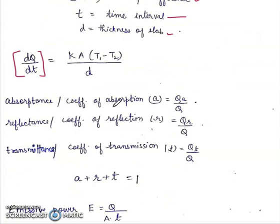Absorptance or coefficient of absorption A is equal to QA upon Q, means heat absorbed upon total heat. R will be heat reflected upon total heat, and T will be heat transmitted upon total heat. A plus R plus T is equal to 1.